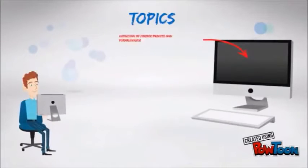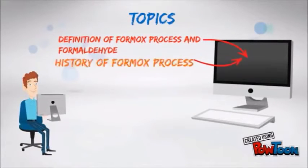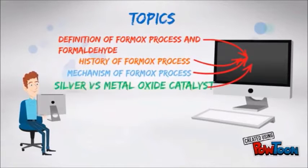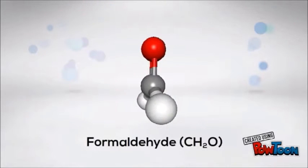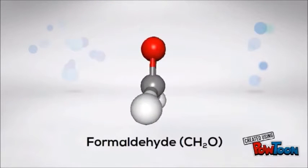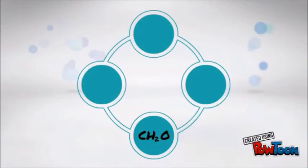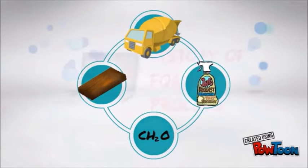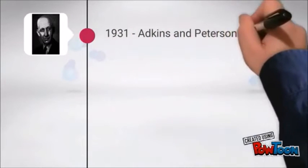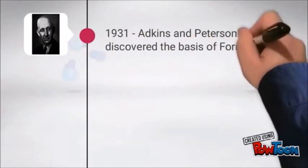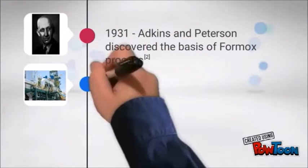Today's topic: the Formox process. The Formox process is a methanol catalytic oxidizing process for formaldehyde production. Formaldehyde is used to bond composite wood, repair concrete, and kill bacteria. In 1931, Adkins and Peterson discovered the basis of the Formox process.